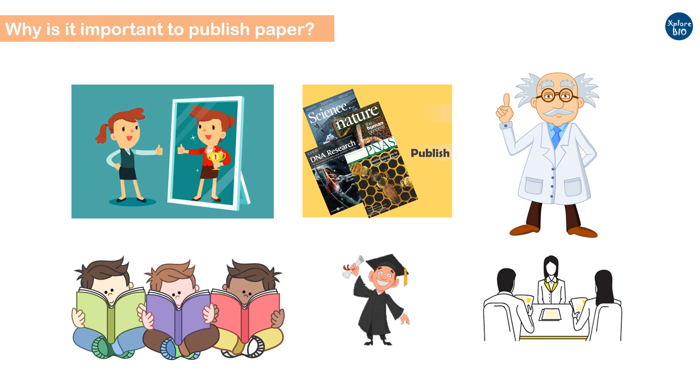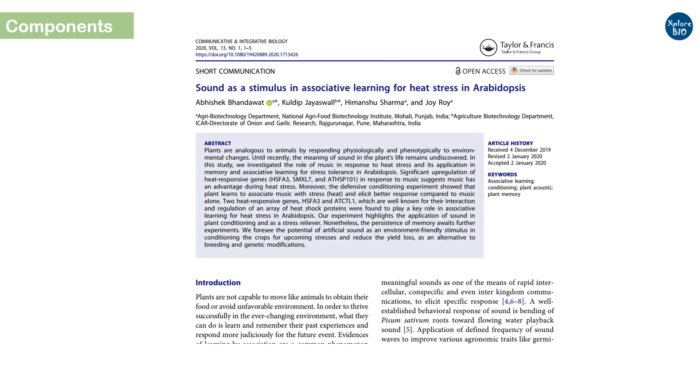So now you know the benefits of publishing a paper. Now let's see what are the major components of a research paper. Here is an example of a published research paper. You can see the title. This is the author information, their affiliation or the place where the research was conducted.